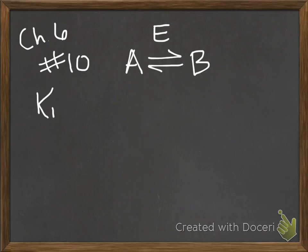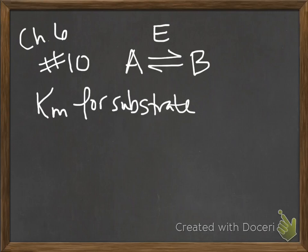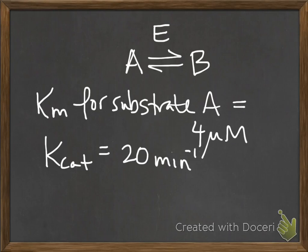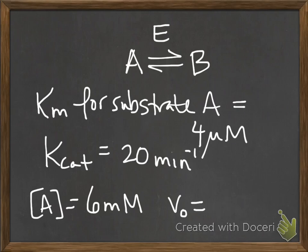The KM for the substrate A of the enzyme is 4 micromolar, and the Kcat is 20 per minute. So in part A, we're told that the concentration of A is 6 millimolar for one of your experiments. You measured the initial velocity, and it was 480 nanomolar per minute.